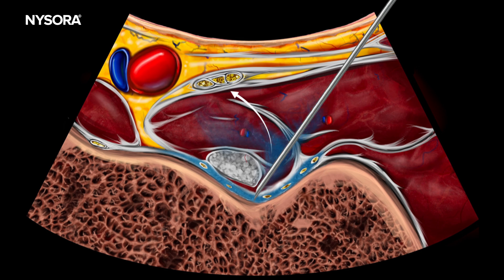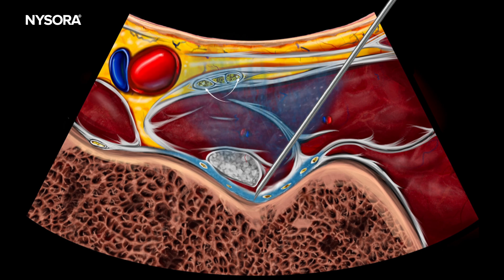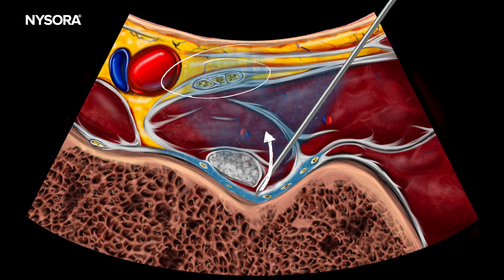This is problematic because the space between the periosteum and the posterior fascia of the iliacus muscle is limited in its capacity. Consequently, large volumes of the injectate are likely to escape into the muscle, increasing the risk of a femoral nerve block.